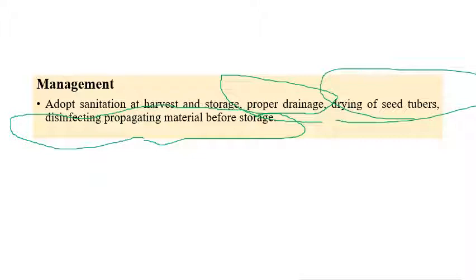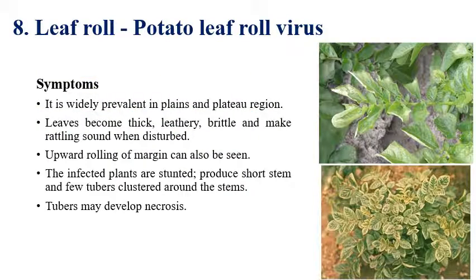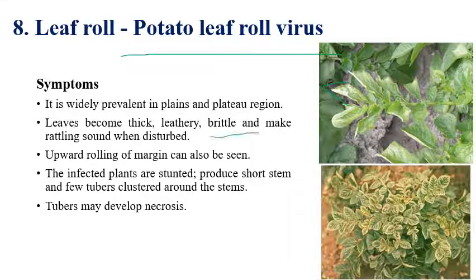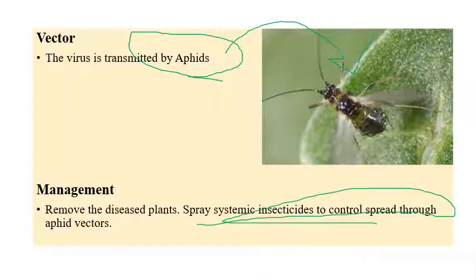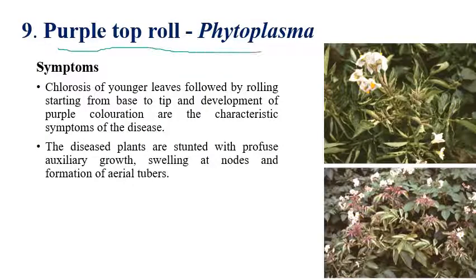Leaf roll is caused by potato leaf roll virus. Rolling of leaves is a common symptom in any viral disease. The leaf size can be reduced and leaves become leathery and brittle. Tubers may also develop necrosis and their size can be reduced. The leaf roll virus is mainly transmitted by aphids. By controlling the aphid vector using systemic insecticides, we can automatically control the disease.